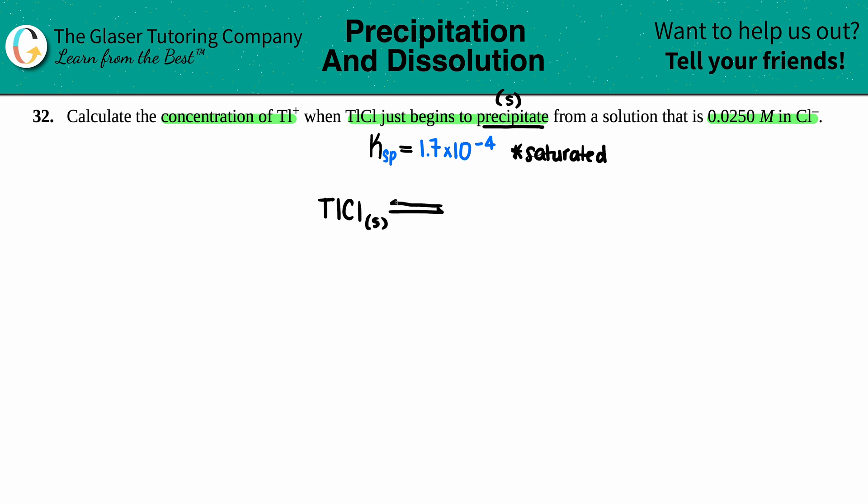If my screen is flickering, there's a really bad thunderstorm, so hopefully you get this video. If not, my power went out and I'm in the dark. Anyway, let's keep going. So TICl solid breaks down into the two ions: TI+ aqueous...